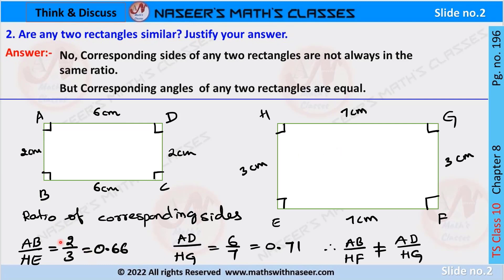Next, we have to find the ratio of the corresponding sides. Here, ratio of corresponding sides AB by HE is equal to 2 by 3, which is equal to 0.66. Another corresponding sides ratio is AD by HG, equal to 6 by 7, which is equal to 0.71.